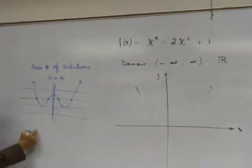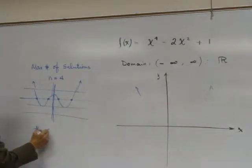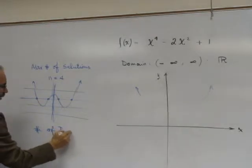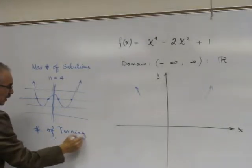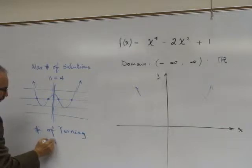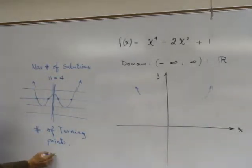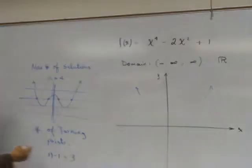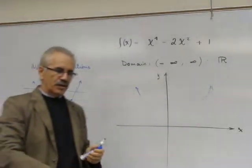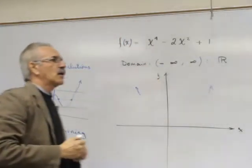How many turning points? Number of turning points: n minus 1, which is 3.